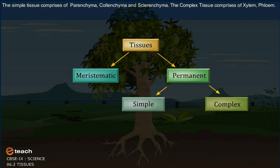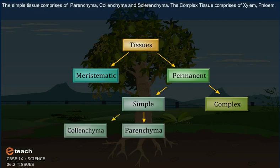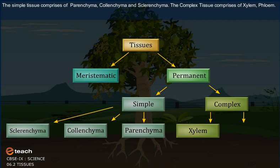The simple tissues comprise parenchyma, collenchyma, and sclerenchyma. The complex tissues comprise xylem and phloem.